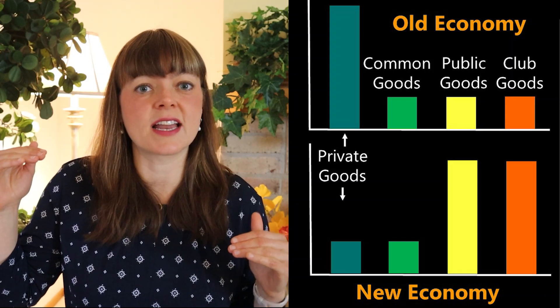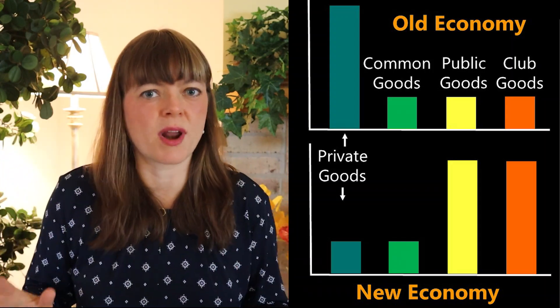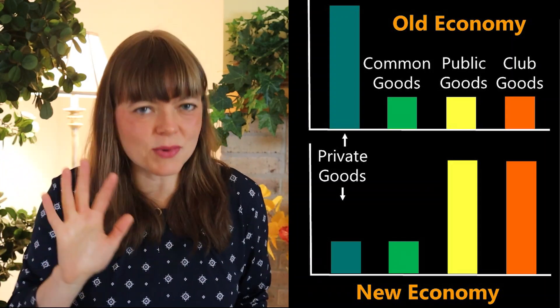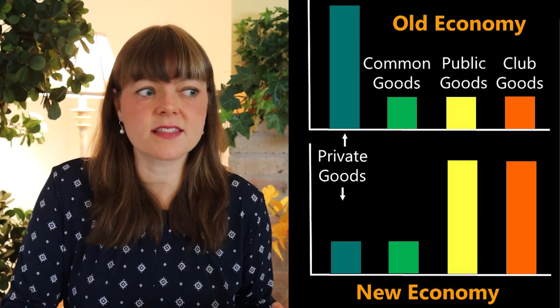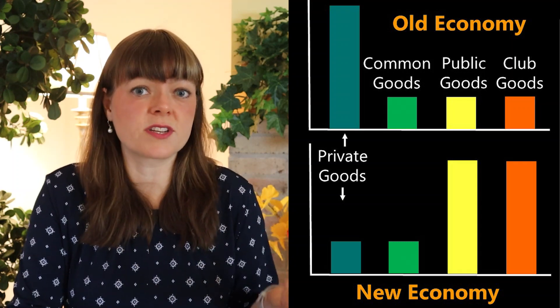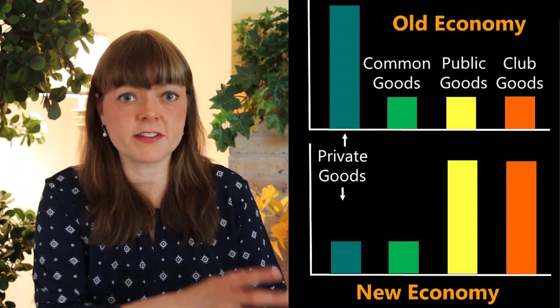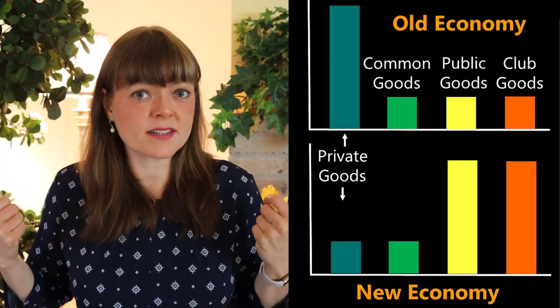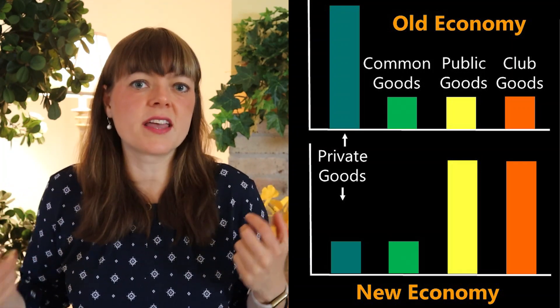Why is the digital economy fundamentally different than the industrial economy? There are a number of answers to this, but in this video I'm going to go over probably the most important one, which is that the digital economy moves us toward a public goods and club goods economy instead of a private goods economy. Another way of putting this is that there were some features that were natural to the economy of things — like physical things — that are either absent or artificial in the digital economy.